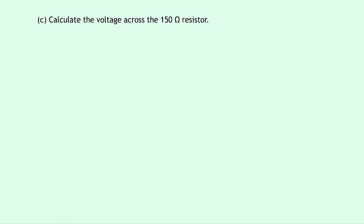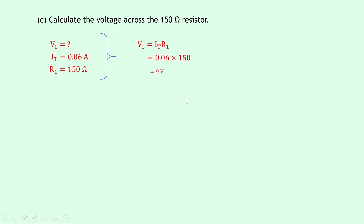Part c asks for the voltage across the 150 ohm resistor. The longer way uses V equals IR: V1 equals IT times R1 equals 0.06 times 150, which equals 9 volts. Or the quicker way uses the series voltage rule: V1 equals VS minus V2 equals 12 minus 3, which also equals 9 volts.